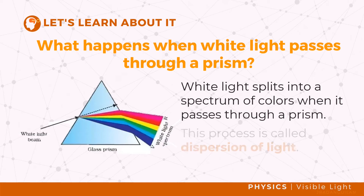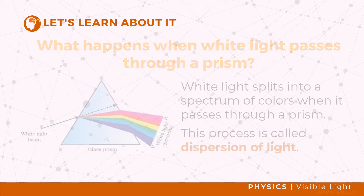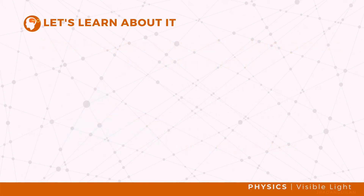The colors are arranged in order based on their wavelength and frequency, and white light is made up of all the colors in the spectrum. For sound waves, the frequency indicates the intensity of the sound; for light, the frequency indicates the color.